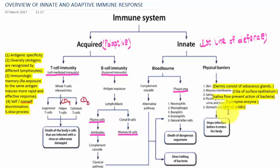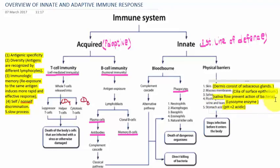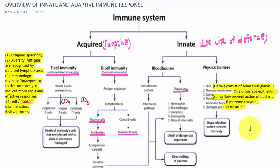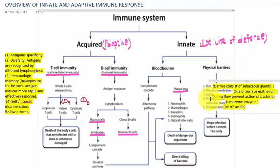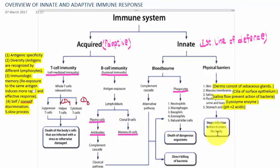The next barrier is saliva, which consists of secretions from the salivary glands that prevent the action of bacteria and act as a defense mechanism. In urine and tears, an enzyme called lysozyme is present. The stomach acid has a pH of 2 and is very acidic in nature, which kills bacteria and helps in defense. Overall, physical barriers — the skin, mucous membranes, saliva, urine and tears, and stomach acid — all stop infections before they enter the body.